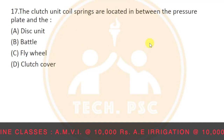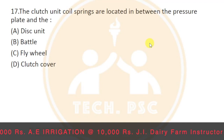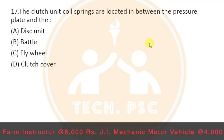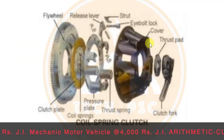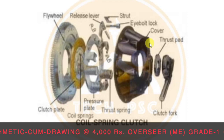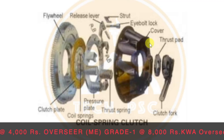The clutch unit coil springs are located between the pressure plate and the clutch cover. We will use a coil spring between the pressure plate and the clutch cover.